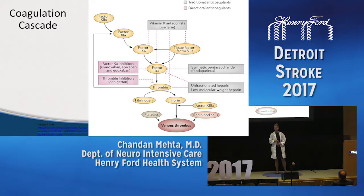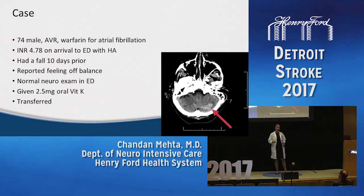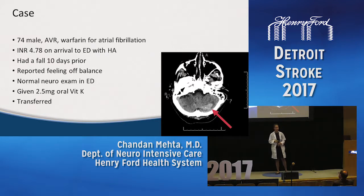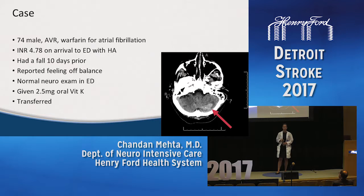You can see on the coagulation cascade where the traditional anticoagulation agents work in gray, and in pink where the direct oral anticoagulation agents work. I wanted to tie this all together with a case. We recently had a 74-year-old gentleman with an aortic valve replacement done over a decade ago. He was on warfarin for AFib and came to the ER with an INR of 4.78.